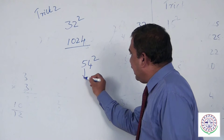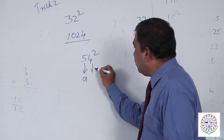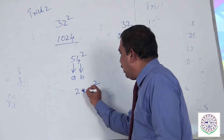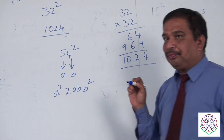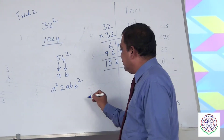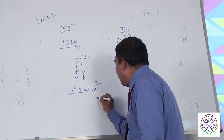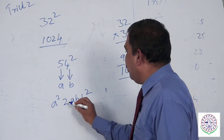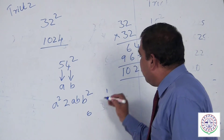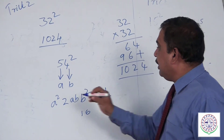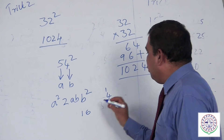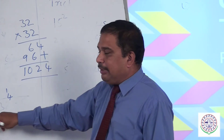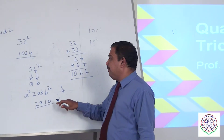For 54 squared, consider the digits as a = 5 and b = 4. Use the formula: b squared, then 2ab, then a squared — written right to left. b squared = 16; keep 6, carry 1. Then 2 into a into b = 2 into 5 into 4 = 40, plus carry 1 = 41; keep 1, carry 4. Then a squared = 25, plus 4 = 29. So 54 squared = 2916.